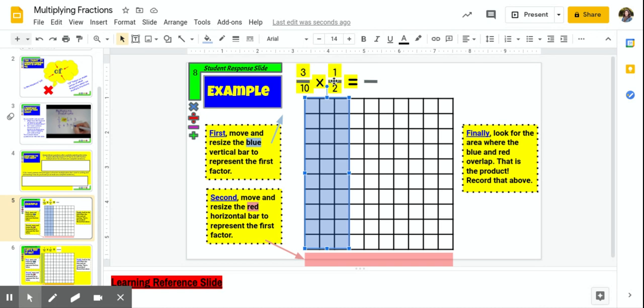Now I want to represent my second factor. My second factor here is 1 half. I'm going to do this with the red horizontal bar that you'll notice is at the very bottom of the slide. This time, boys and girls, we're going to represent it horizontally. So I'm going to take this bar and I'm going to drag it and drop it onto my grid, but again, I notice that I am just covering up 1 tenth, 1 out of the 10 rows. I want to show 1 half.